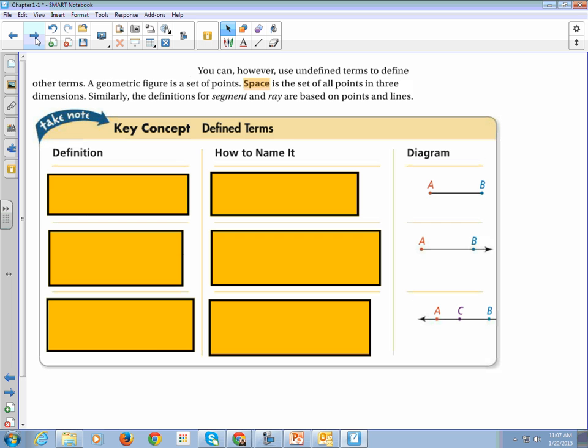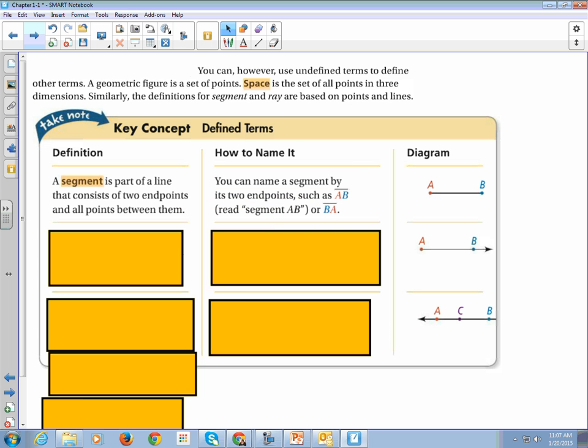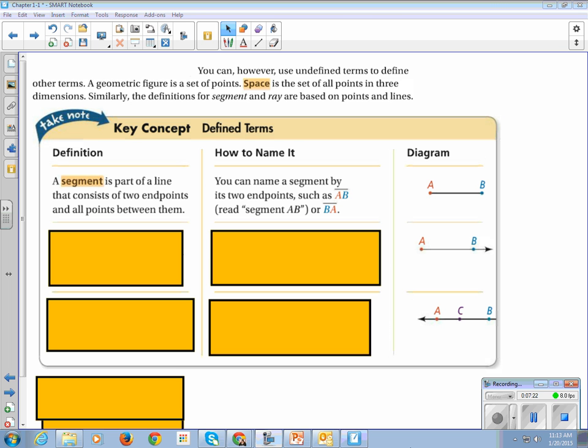Okay. One more vocabulary. So these are defined terms. We did undefined terms. Now we're doing defined terms. And you guys can just write segment. Just write the word, and you can fill in the rest from the book. So a segment is a line with two endpoints. So it cuts off. We name it the same way we name a line, but instead of the arrows, it has just the line.